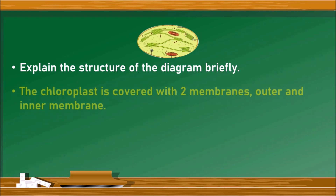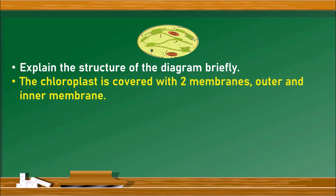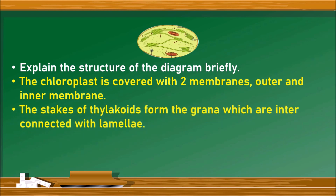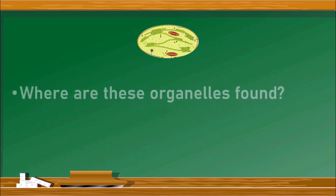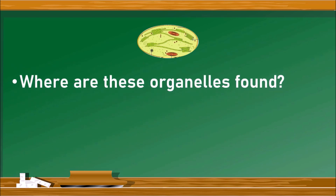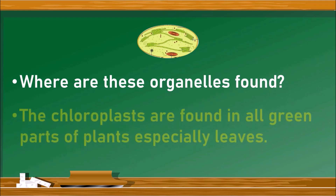Chloroplast is covered with two membranes: outer membrane and inner membrane. There are stacks of thylakoids which form the grana — this contains the light harvesting system. These are interconnected with the lamella, and there is a fluid-like structure known as stroma, which contains all the enzymes required for photosynthesis.